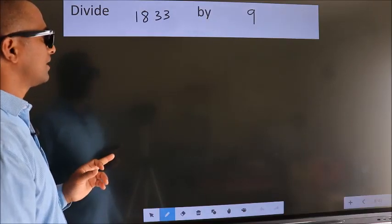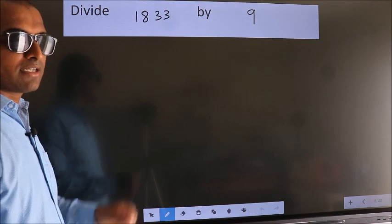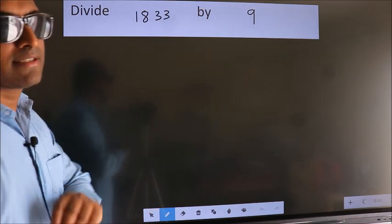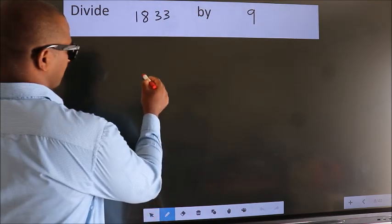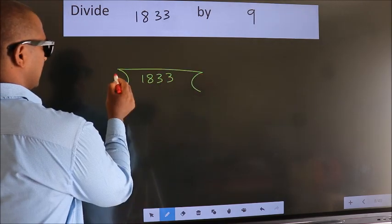Divide 1833 by 9. To do this division, we should frame it in this way. 1833 here, 9 here.